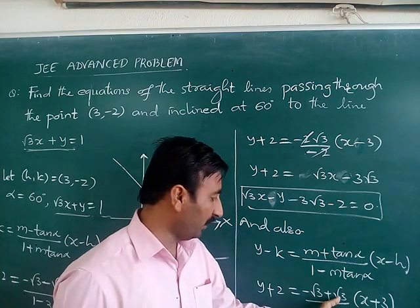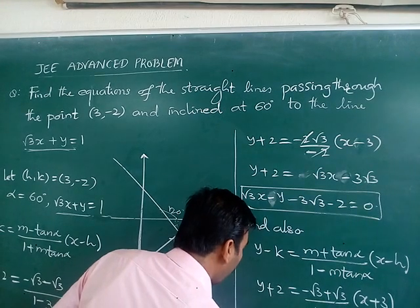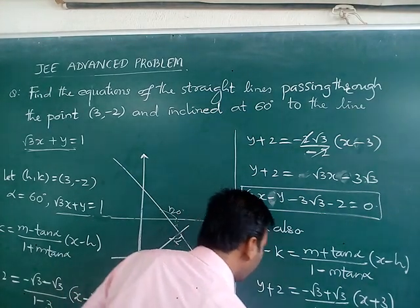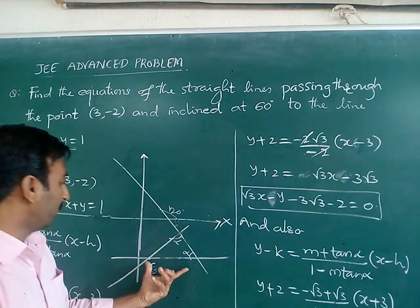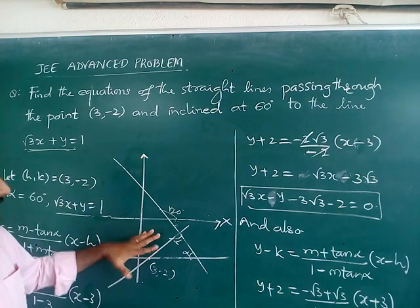When we look at this, minus root 3 plus root 3 is 0, so whole this part is 0. Hence we can say y plus 2 equal to 0. Y plus 2 equal to 0 is a straight line parallel to this one. This is what we earlier we can guess in the question.